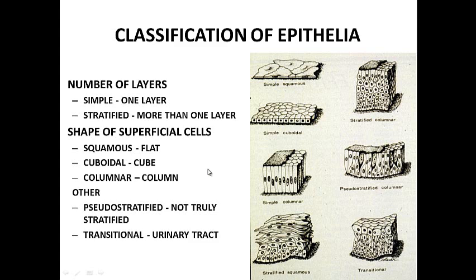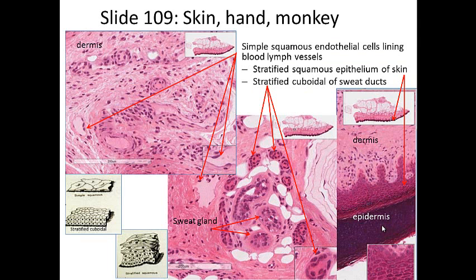There are other types of epithelium as well. One is pseudostratified — it looks like it's stratified, but it's really not because all cells touch the bottom. And then we have transitional epithelium, one that can modify its shape with the filling of the bladder. It's found in the urinary tract.